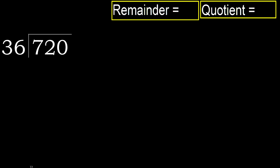720 divided by 36. 7 is less, therefore next. 72 is not less, therefore work with 72. 36 multiplied by which number is nearest to 72, but not greater?